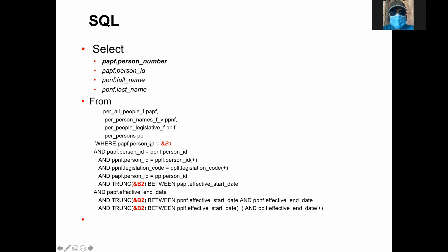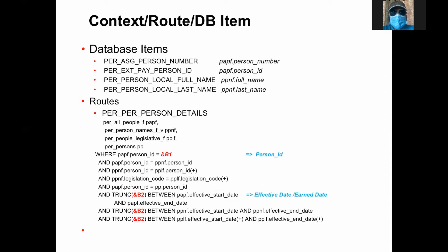Here we are using two types of conditions. One is a person ID — the parameter passed in — and those date-tracking tables which validate the system date or whatever date. The data is basically an effective date passed in. So there are two parameters passed in. To summarize this SQL: the SELECT part is the output information retrieved from the tables. The FROM clause gives you the source — the table names. And the WHERE clause has parameters passed in, and for those conditions the information is retrieved. So there are conditions, there are sources, and there are outputs — the three parts.